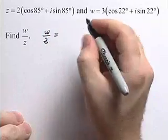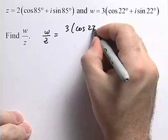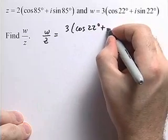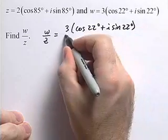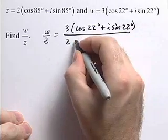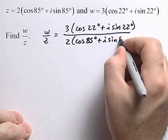So w divided by z, we'll get 3 times cosine of 22 degrees plus i sine of 22 degrees, divided by 2 times cosine of 85 degrees plus i sine of 85 degrees.